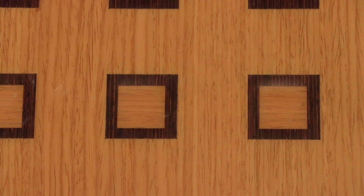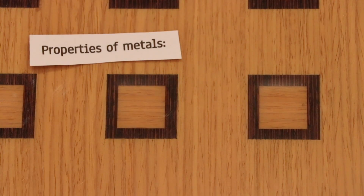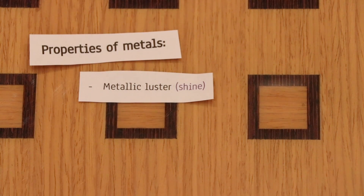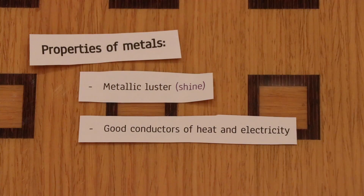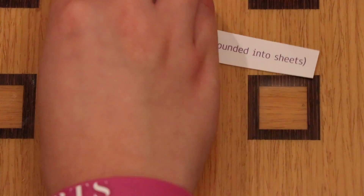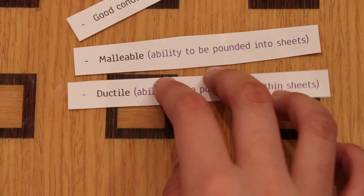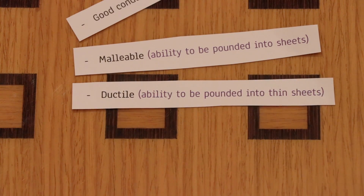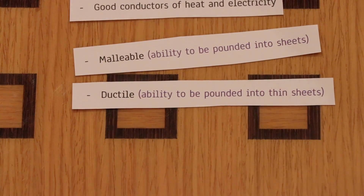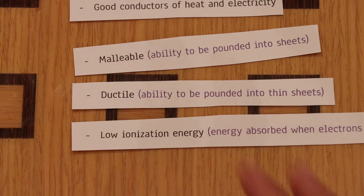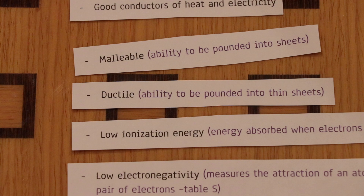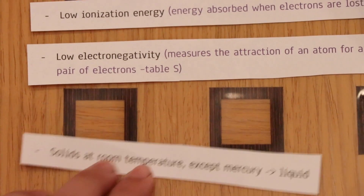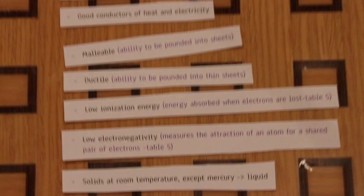Properties of metals include metallic luster, being good conductors of heat and electricity, and being malleable — able to be pounded into sheets. They're also ductile, meaning they can be drawn into thin wires. Metals have low ionization energy and low electronegativity, which measures an atom's attraction for a shared pair of electrons and can be found on Table S. Finally, all metals are solids at room temperature, except mercury, which is a liquid.